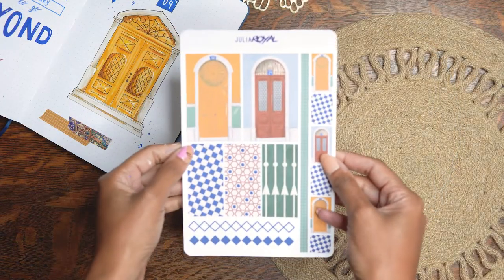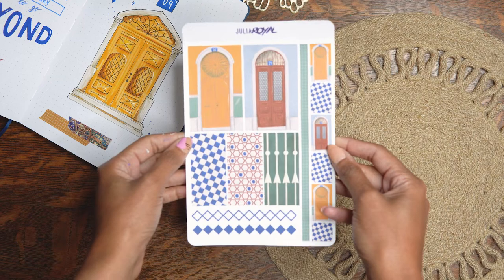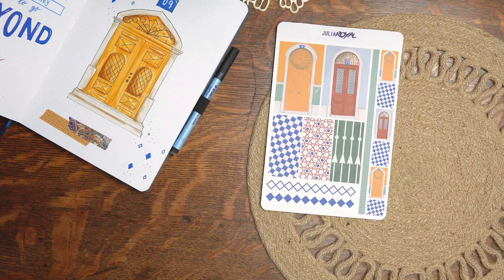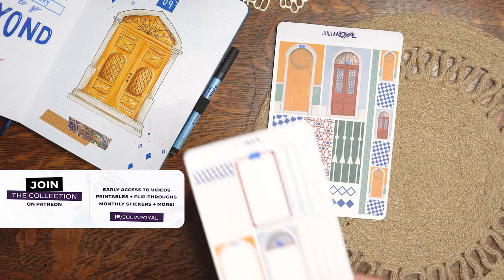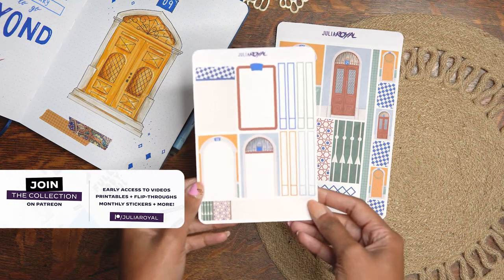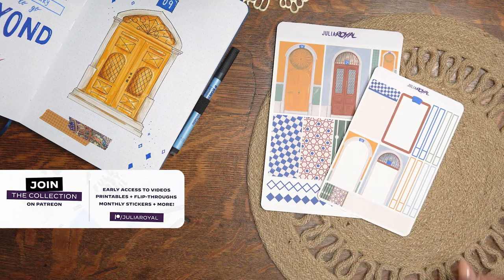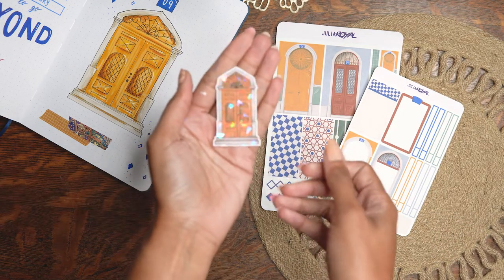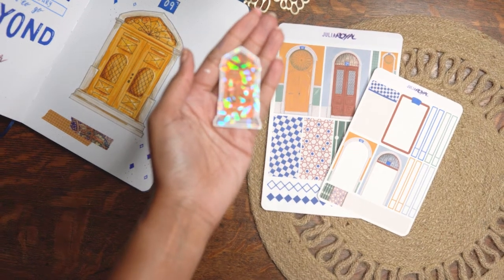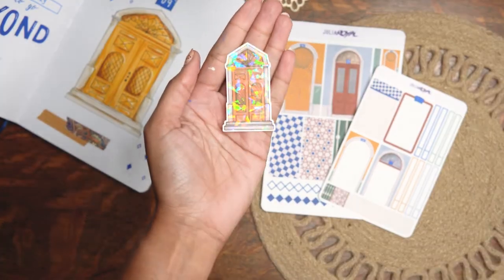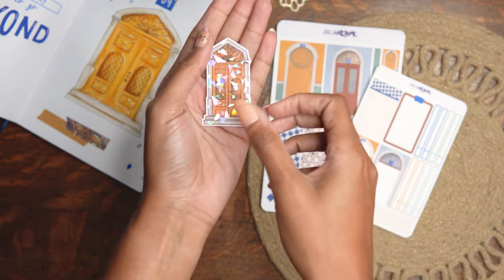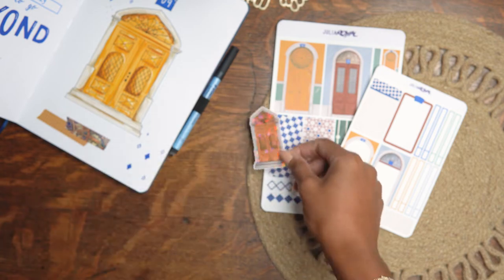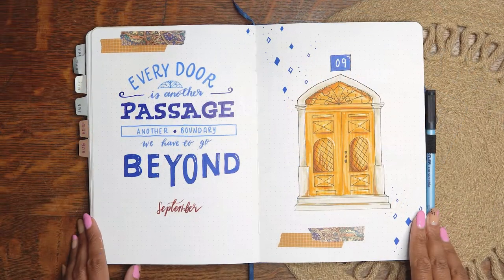Before we take another look at all of the spreads for this month, I wanted to show you the sticker set I made to go along with the theme. This is the decorative sheet. This is the functional sheet with note taking stickers, event call outs and header stickers, and a cute little holographic die cut sticker which I had a hard time getting in focus. Obviously these will be available in my Etsy shop on September 1st. But patrons get these earlier with printables and exclusive videos every month. The links to both will be in the description if you want to check it out and support the channel.